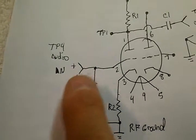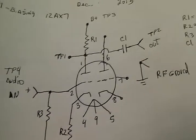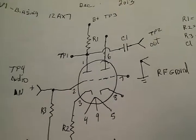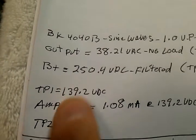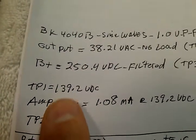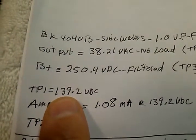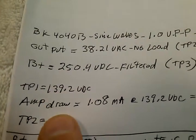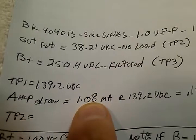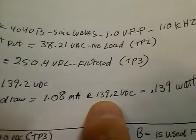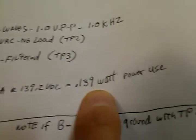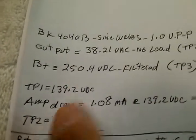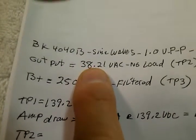It's not capacitor coupled, it's straight on in. The funny thing is, when we were running 250 volts on the B plus, 139 on the plate because of the plate resistor, we were running a little over 1 milliamp, 0.139 watts.